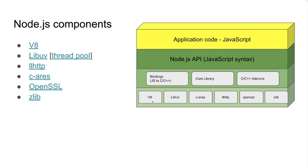Last one: Zlib. Zlib is a massively spiffy, delicately portable compression library — it compresses or decompresses data.